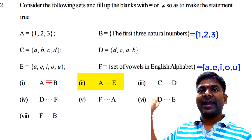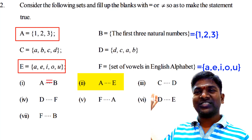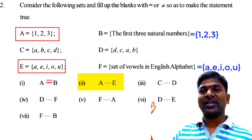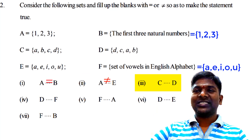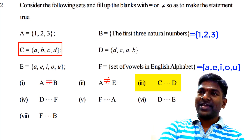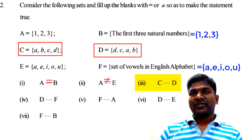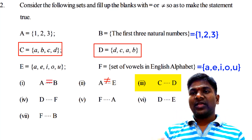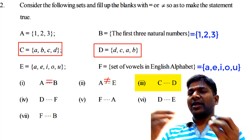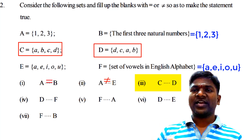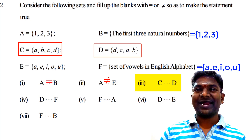Second question: A _ E. Elements of A are 1, 2, 3. Elements of E are A, E, I, O, U. Whether these two sets are equal? No. The first set consists of three numerical elements and set E consists of vowels — they are letters. Both are not equal, so we put the symbol 'not equal.' Third question: C _ D. Elements of set C are A, B, C, D. Elements of set D are D, C, A, B. All the elements are same, only the order of elements is different in sets C and D. So we write 'equal.'